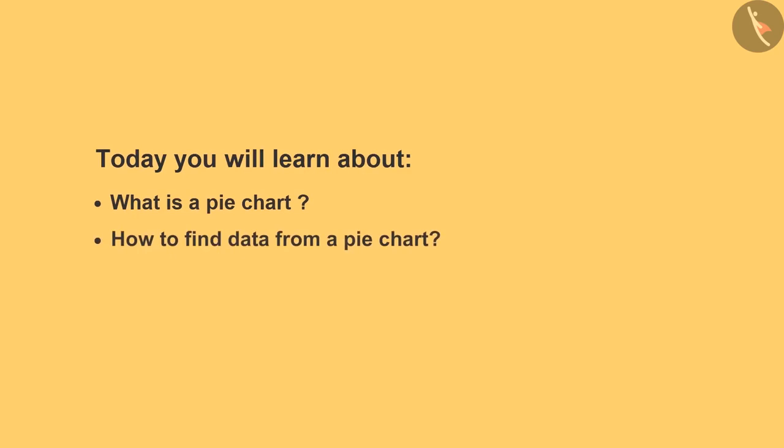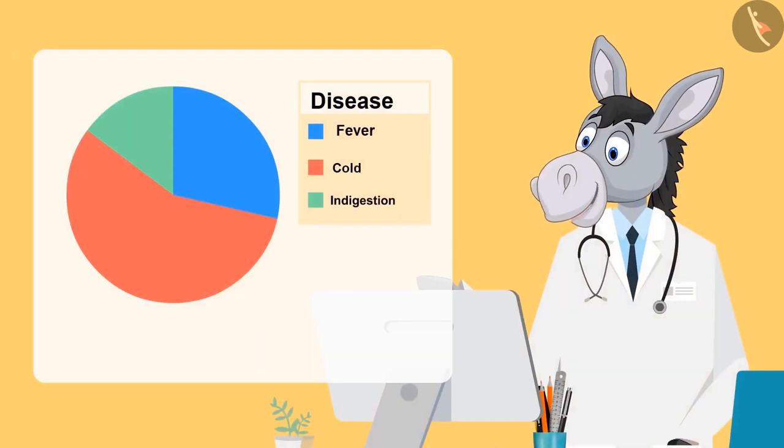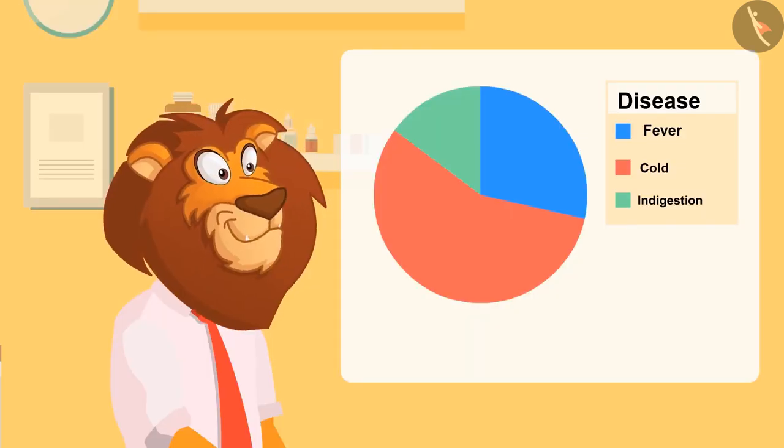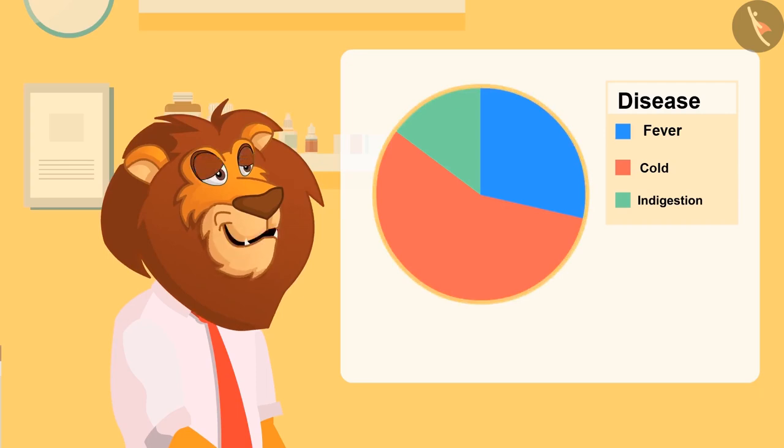So kids, this round shaped chart you are looking at is known as pie chart. Is it because it is round like a pie? Yes.